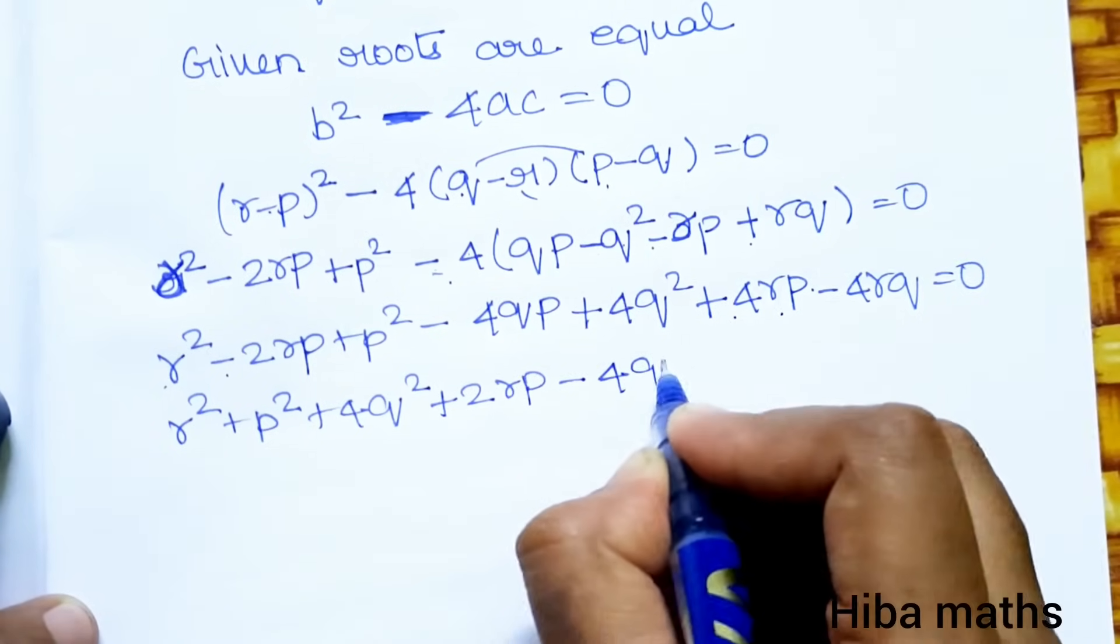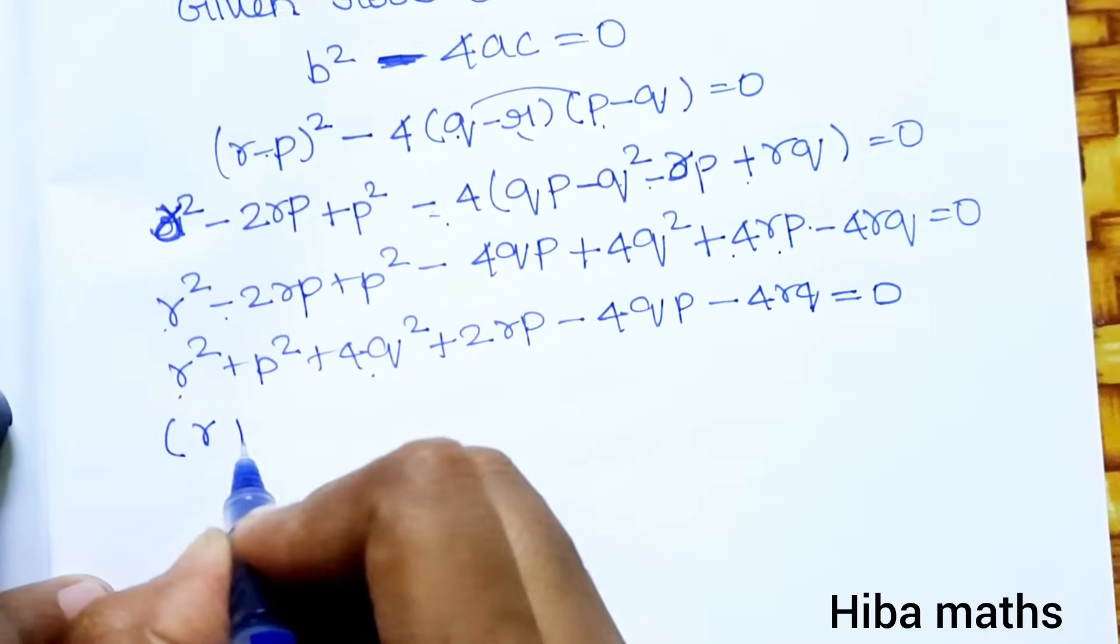Next line: r² - 2rp + 4rp, so 4 - 2 = 2rp, plus p² - 4qp + 4q² - 4rq = 0.